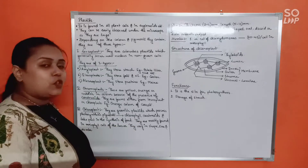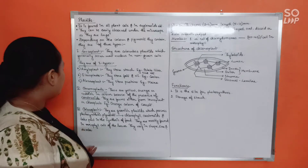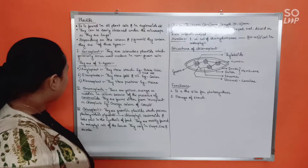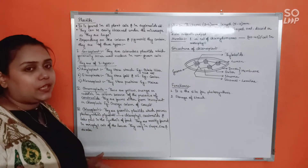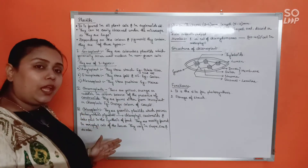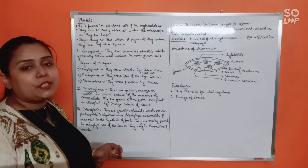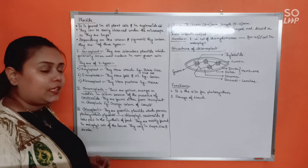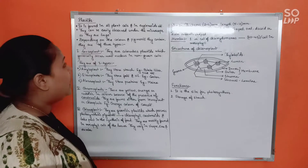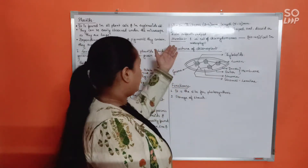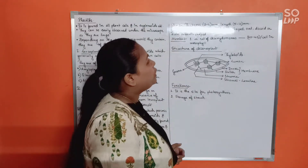Chloroplasts are mostly found in mesophyll cells of the leaves, which are responsible for photosynthesis. They vary in shape, size, and number. In terms of size, the thickness would be 2 to 4 micrometers.